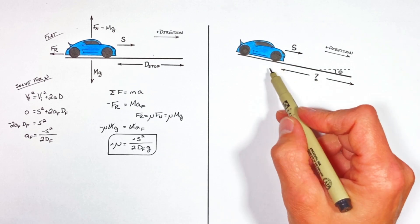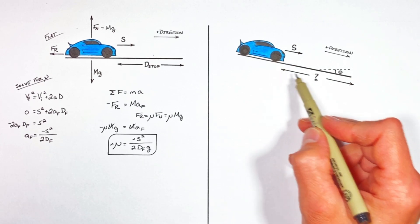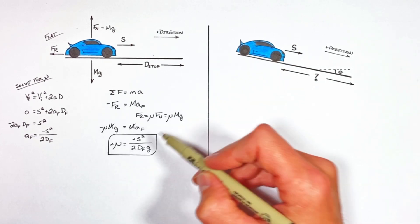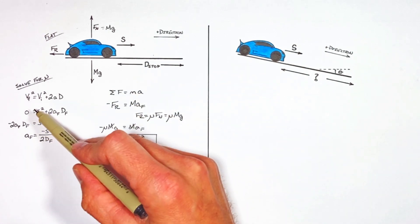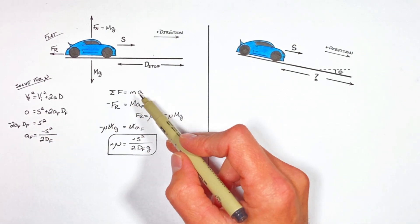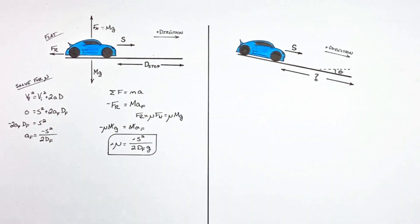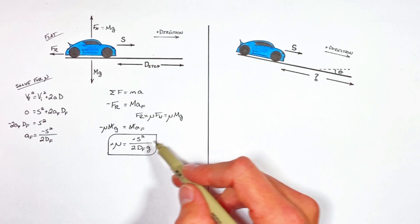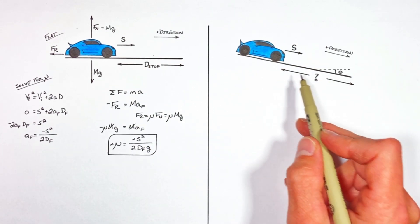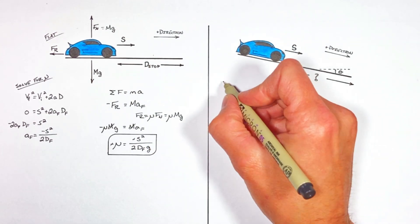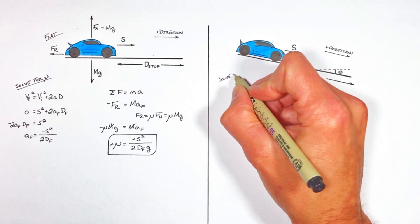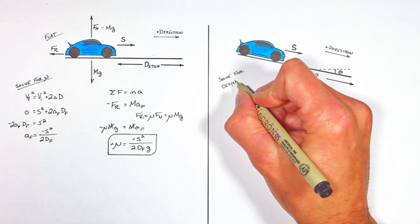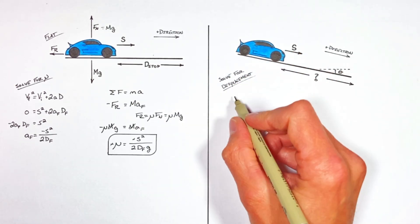When we look at the car on the hill, there's still going to be that same coefficient of friction between the tires and the road. So using that coefficient of friction, we can now solve for the displacement of the car as it slows to a stop on the hill. In solving for the stopping distance on the hill, we're really just working the previous part of the problem in reverse.